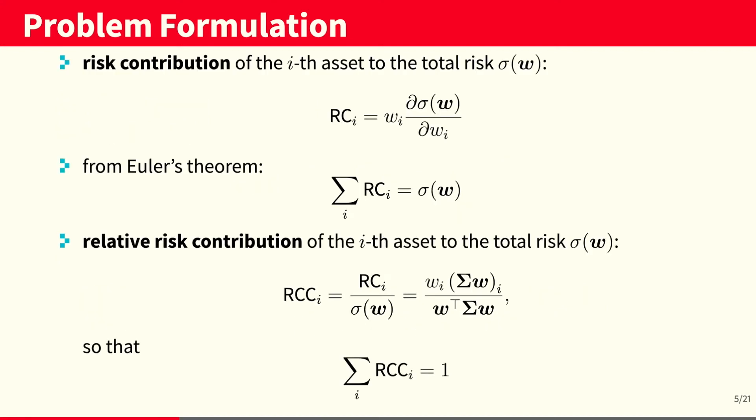Now, the risk contribution of the ith asset is defined as follows. And from Euler's theorem, we can see that if we sum over all the risk contributions, we get back the total portfolio volatility. The relative risk contribution is basically a normalized version of the risk contribution.